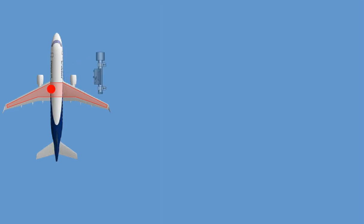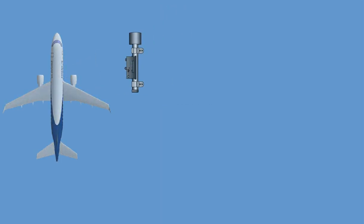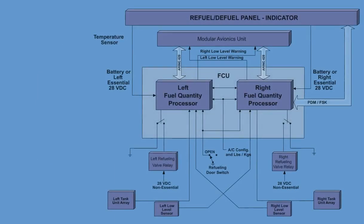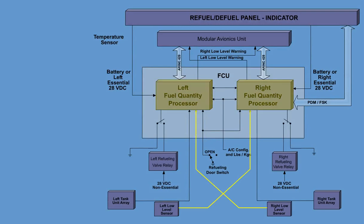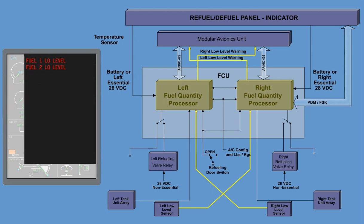The fuel low-level sensor is independent of the tank units. Each fuel quantity processor of the FCU measures the low-level sensor from the opposite fuel tank, ensuring complete independence from the fuel gauging. The warning signals are then sent to the MAU. When the fuel level in the wing reaches 300 kilograms, a fuel one or two low-level warning message appears on the ICUS.